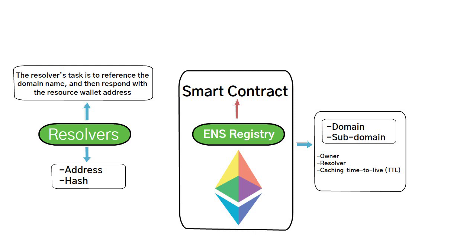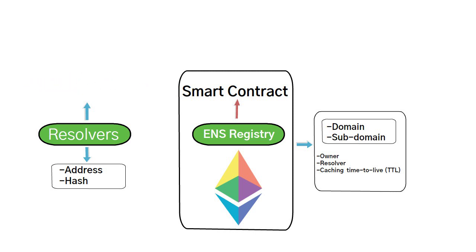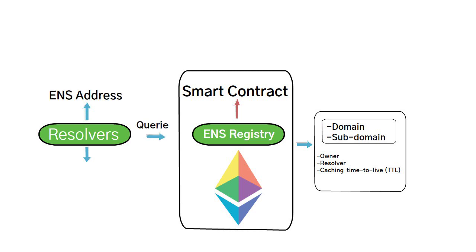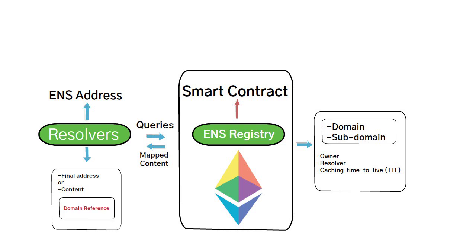With those two components listed, let's map the basic ENS architecture and flow. When resolving an ENS address, you first query the ENS registry for an ENS address. The registry answers with the resolver that should be queried for the mapped content, and the resolver in return points you to the final address or content that the domain references.